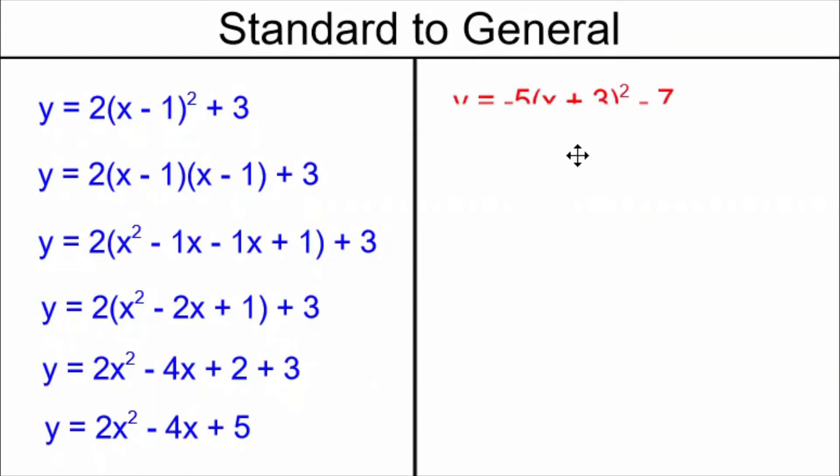Let's do another example. This time my a is negative, my h is negative (negative 3, that is), and my k is negative (negative 7). Will this change very much? No, not really.